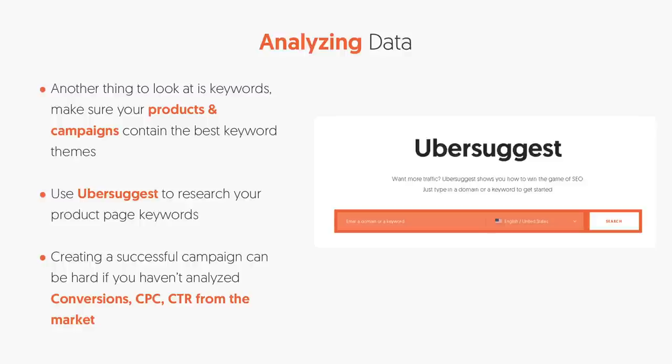When you put a keyword into Ubersuggest, click on Keyword Ideas in the left navigation and it'll give you tons of suggestions. The ones with high volume and a high CPC tend to be the better ones. High CPC means cost per click — if people are willing to pay more per click, it tends to convert better. To see what keywords your competitors are going after, put in their URL, go to Traffic Analyzer in the left navigation, click Keywords, and it'll show you all the keywords they're targeting.